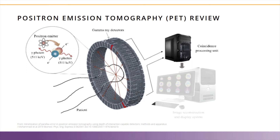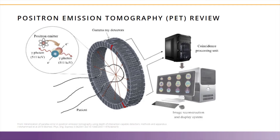These detectors send a signal to the electronics when they detect a gamma photon with a specific energy related to the isotope. The electronics are programmed to determine which gamma rays were detected in coincidence — those sensed by opposing gamma ray detectors at the same time. The electronics then form a line of response, or LOR, between the coincidence gamma rays, and use this information from all detected coincidence events to reconstruct an image, providing spatial information about the location of the radioisotope and quantifiable measures of concentration based on the counts.